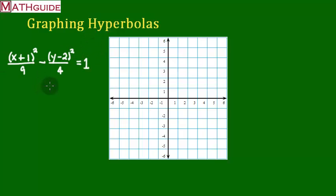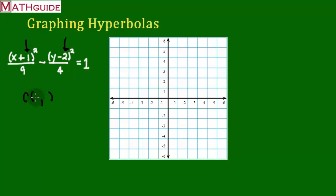First of all, we're going to graph this. It turns out that when we graph this, it graphs exactly the same way as the ellipse. The first thing you do is identify where the center is. When it comes time to identify the center, you take the opposite of the values inside the parentheses. That's 1, so it's going to be negative 1. That's negative 2, so it's going to be positive 2. I'm going to go 1 to the left, 2 up on our graph. Put a dot there — that's going to be the center, labeled with a tiny little C.